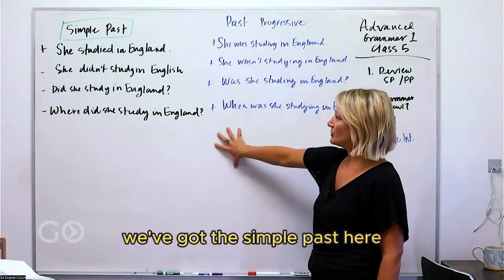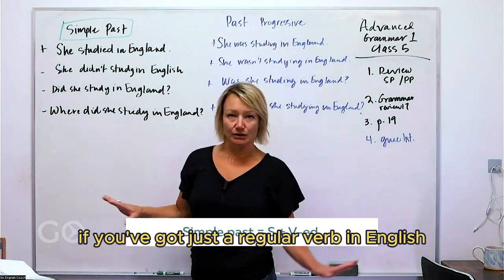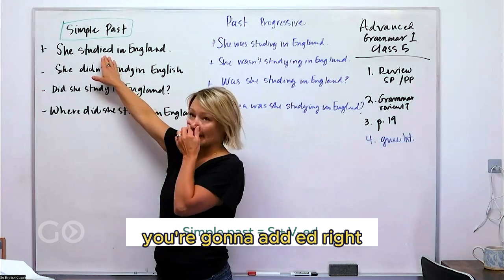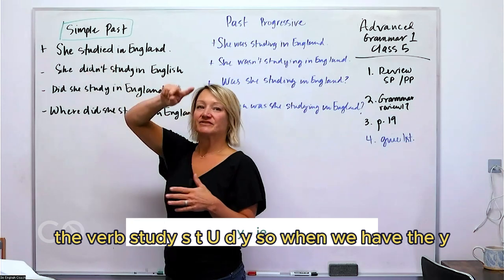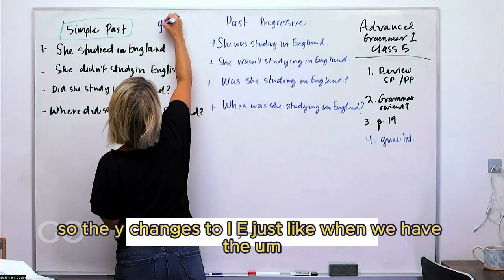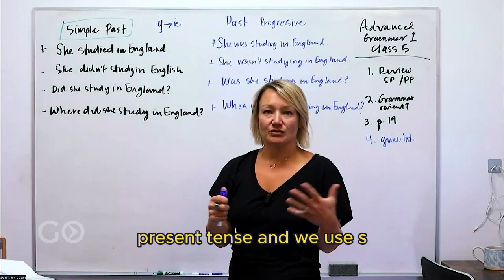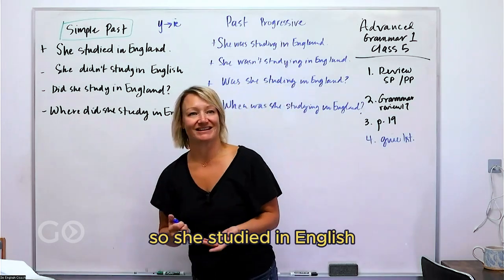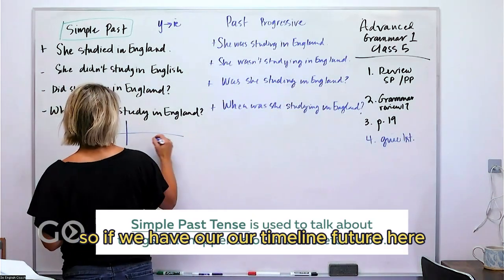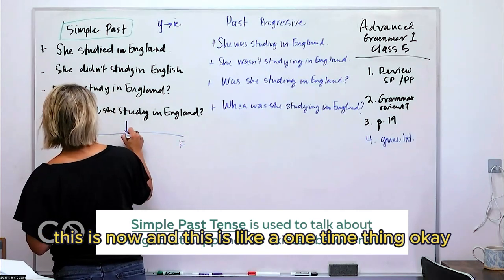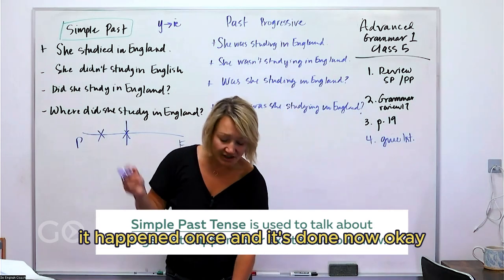Let's do a quick review. We've got the simple past here and past progressive here. Simply put, if you've got a regular verb in English, you add -ed. This one's a little different because it's the verb 'study' — s-t-u-d-y. When we have the y, it changes to -ie. So 'she studied' in England — that's the past tense, a one-time thing. On our timeline, it's something that happened once and it's done now.